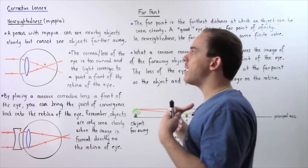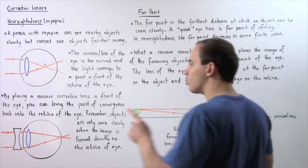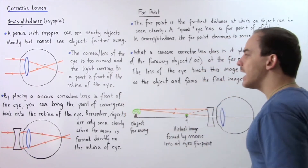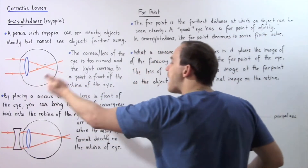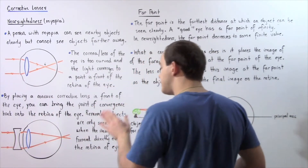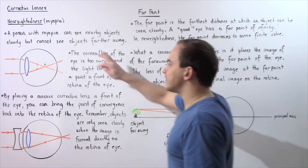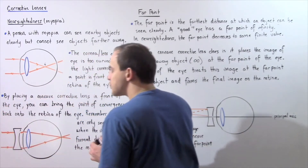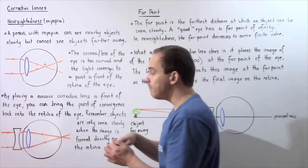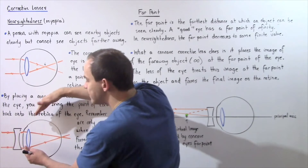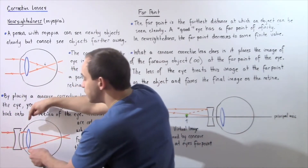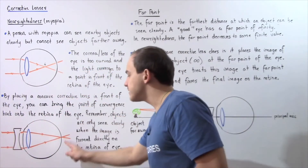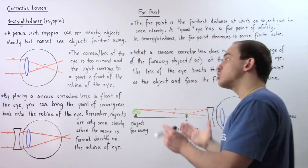To temporarily fix nearsightedness, we place a concave or diverging corrective lens in front of the cornea of the eye to bring the point of convergence back onto the retina. By placing this diverging lens in front of the eye, the rays of light diverge slightly before hitting the cornea. Because of this slight divergence, the rays will converge at a point found directly on the retina, and the object will appear clearly.